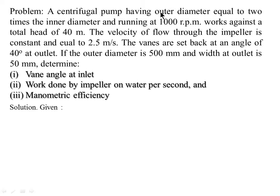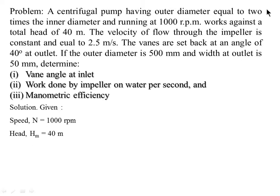From the problem: D2 equals 2 times D1, speed N equals 1000 rpm. The pump works against a total head of 40 meter — this is the manometric head, denoted by HM, so HM equals 40 meter.